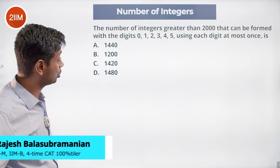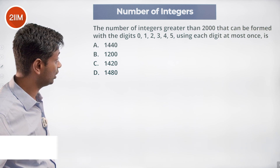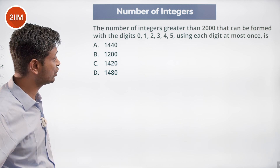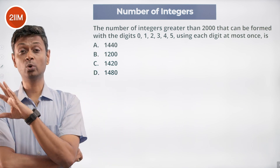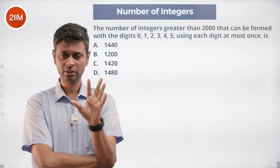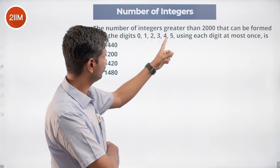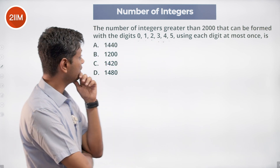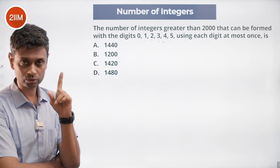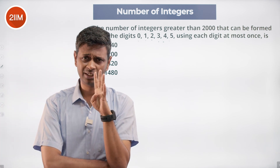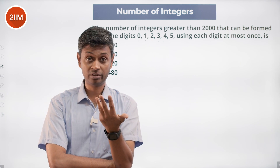The number of integers greater than 2000 that can be formed with the digits 0, 1, 2, 3, 4, 5, using each digit at most once — no repetition. So the maximum we can form are 6-digit numbers using these six digits. We want to find all integers greater than 2000. Since 2000 is a four-digit number, we are basically counting all five-digit numbers, all six-digit numbers, and then some four-digit numbers.